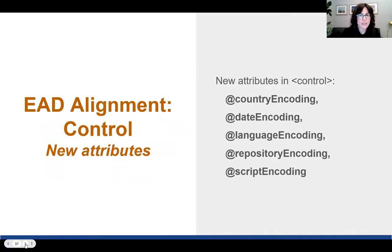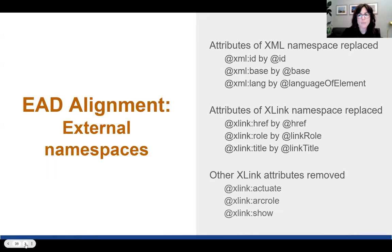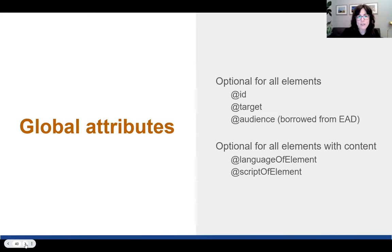Ailey is going to cover the control section in more detail, including examples of encoding. Briefly, in control, new attributes align with EAD: encoding for country, date, language, repository, and script. There are also new optional elements, and the removal and replacement of attributes regarding external namespaces further aligns with EAD. Finally, there are five newer replacement global attributes, and there will be a detailed explanation of both internal and external referencing later with examples.